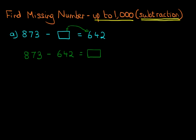We can now do this using the vertical format. We have 873 minus 642. Let's label the columns. We've got units, tens, and hundreds. We are now ready to do the subtraction. Always check the sign.